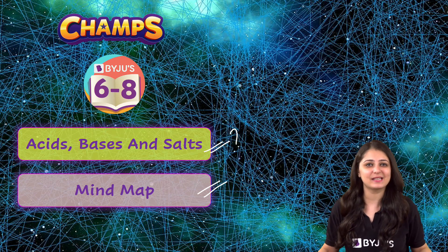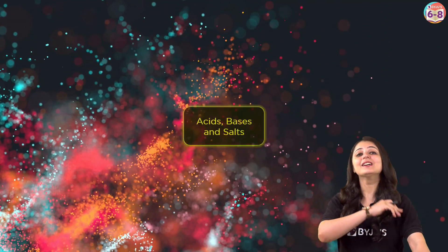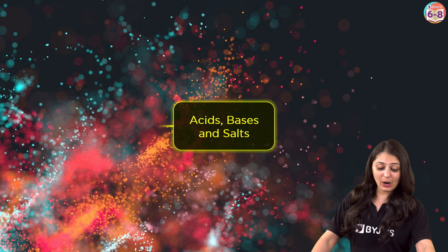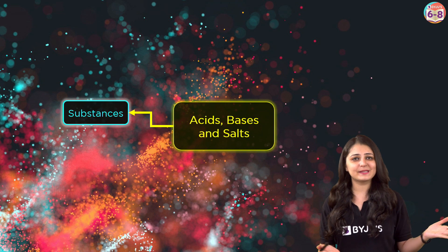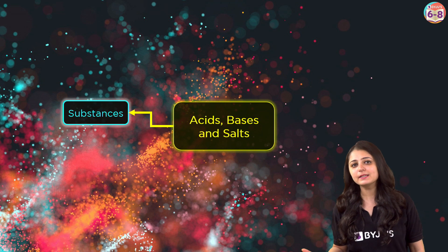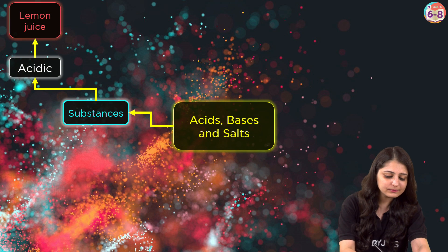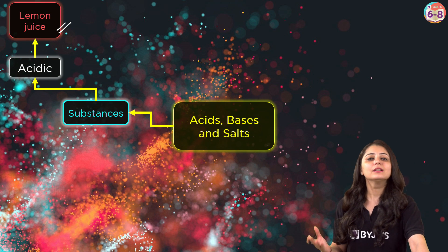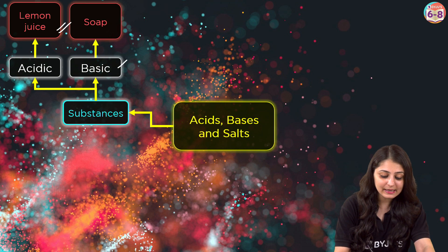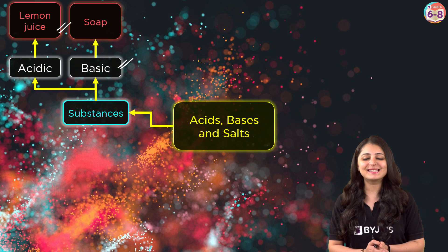We have so many substances around us, and they don't taste the same. Some are sour, some are bitter, some are sweet, some are salty, some have no taste at all. For example, lemon juice or orange — they contain citric acid. Soap contains sodium hydroxide or potassium hydroxide, which means it's basic in nature. Common salt is sodium chloride, NaCl, and it is salty.